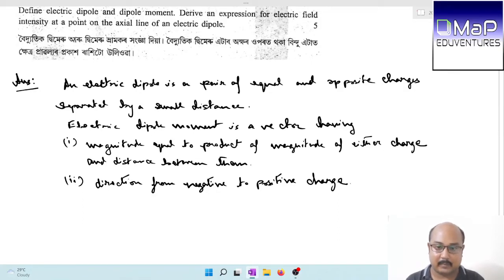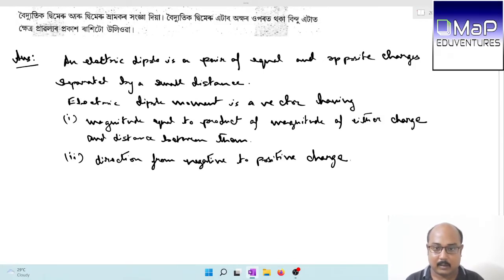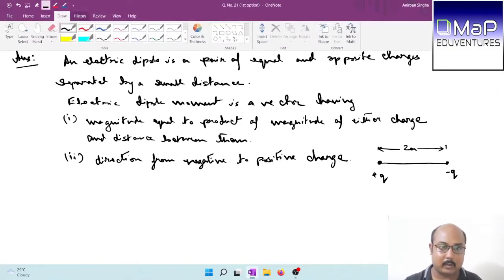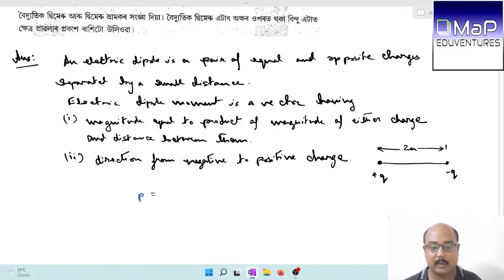Electric dipole is a pair of equal and opposite charges separated by a small distance. The ideal electric dipole is a pair of infinitely large charges separated by a vanishingly small distance. The charges q1 and q2 tend to infinity and the distance between them tends to zero. Electric dipole moment is a vector. The electric dipole moment is a vector which has magnitude equal to product of magnitude of either charge and distance between them, with direction from the negative to the positive charge.